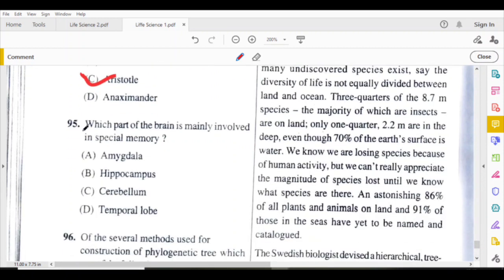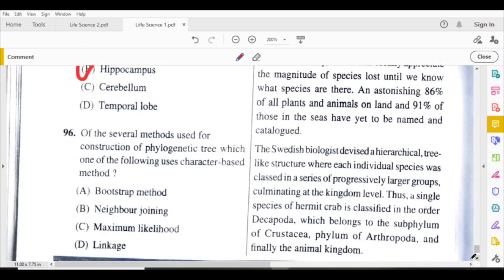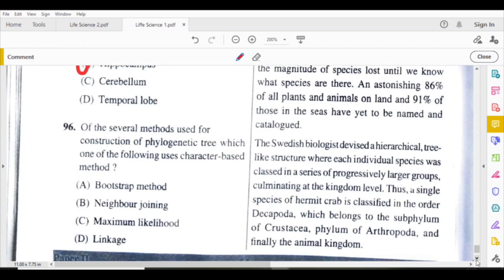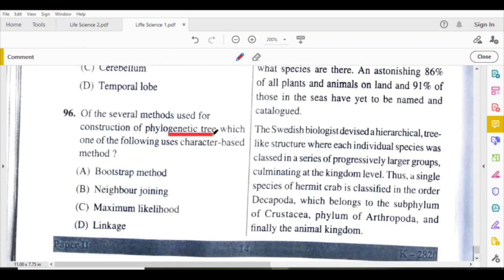Which part of the brain is mainly involved in spatial memory? Hippocampus. For phylogenetic trees, by considering the characters, character-based method in the phylogenetic tree, maximum likelihood.